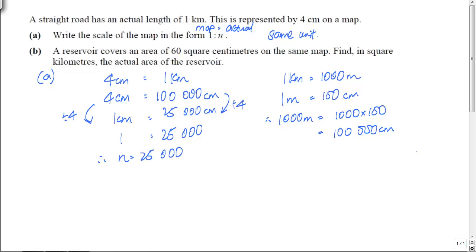So that is how we actually answer this question. It's a one mark question. Now, the next part. A reservoir covers an area of 60 cm². So I'm going to write this. This is actually cm², 60 cm². On the same map. Find in square kilometers, so km², the actual area of the reservoir.